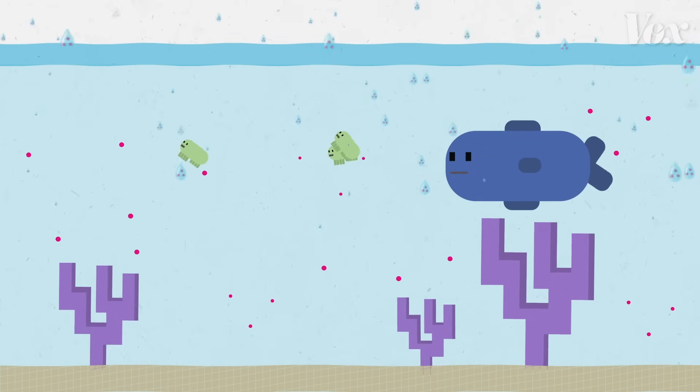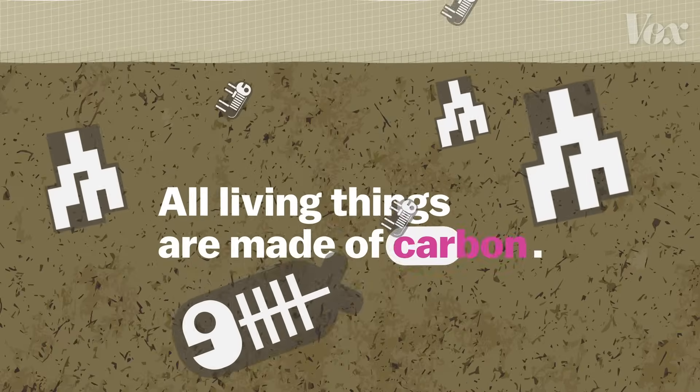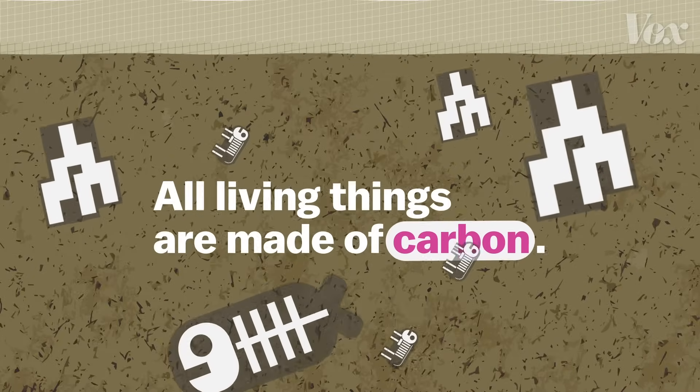But just like animals, the coral and plankton die too. In short, all living things are made of carbon, and they eventually end up in the ground.